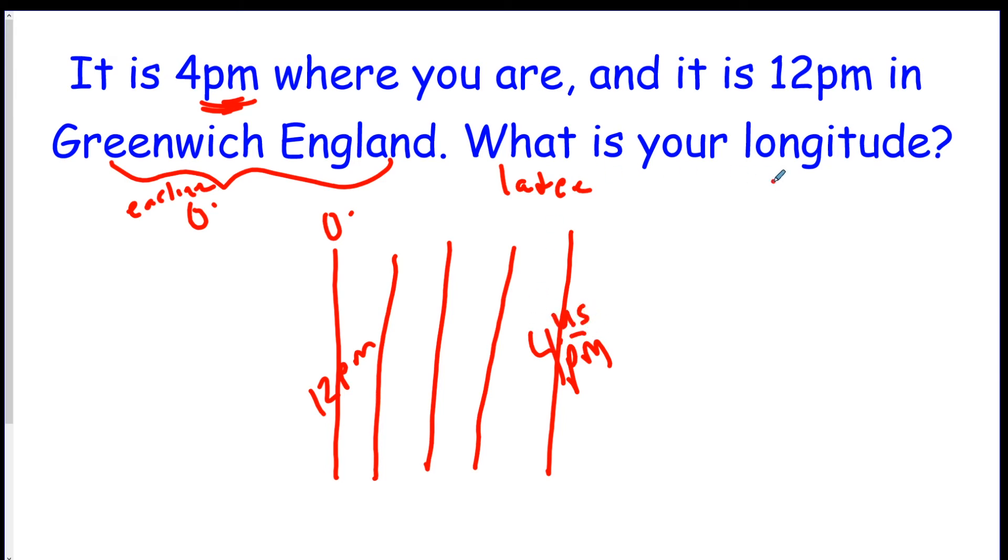So we have to figure out where is this. Well, 0, so it goes 15 degrees east, 30 degrees east, 45 degrees east. So we're at 60 degrees east.